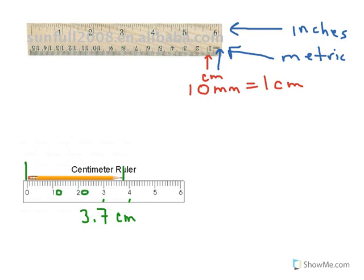So 10, 20, 30 millimeters plus that 7 extra lines means that that is 37 millimeters.